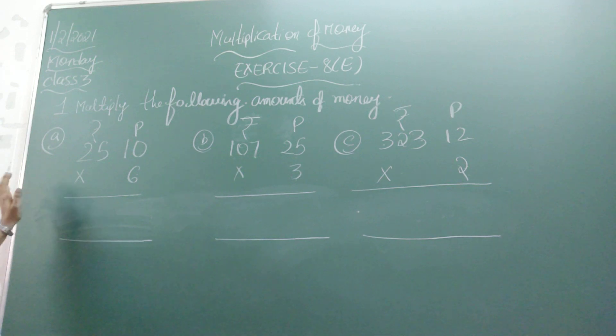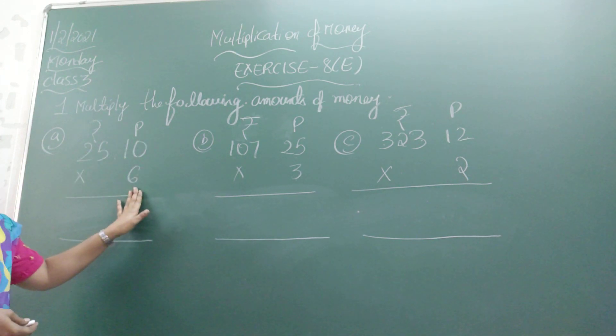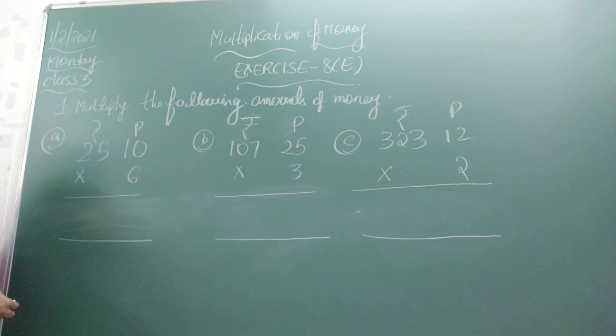Look at the first question. What is given here? That is 25 rupees, 10 point. After the point you will have paise. That is how much? 10 paise. Multiply with 6. So let us start multiplying.